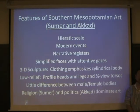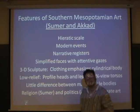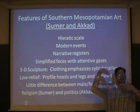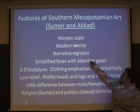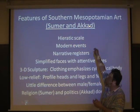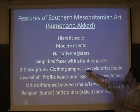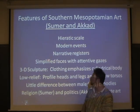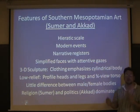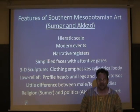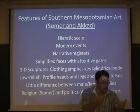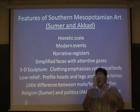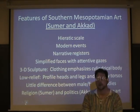Features of southern Mesopotamian art — true of both Sumer and Akkad. We have hierarchic scale, meaning larger figures are most important, larger in proportion than smaller figures. We have narrative events, particularly showing up in Akkad, the later period. We have narrative registers that tell the story throughout the artwork. Simplified faces, and one of the most important features: attentive gazes — eyes that stare into your soul. It was believed that if you didn't look someone in the eye, you had malevolent evil intentions. This is where we get the idea of the evil eye.